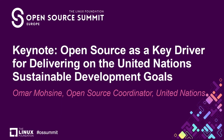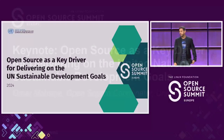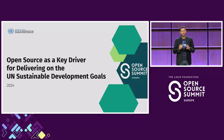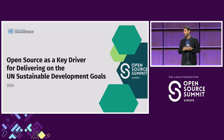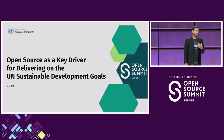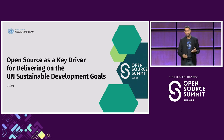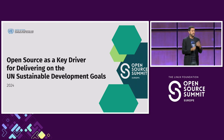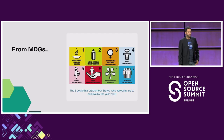Nice to see you all. Hi, my name is Omar Mohsin. I work for the United Nations Office of Information Communication Technology, also for the UN Special Envoy on Technology. Very happy to be here today to talk to you about a topic that is really very close to our heart — the topic that we believe has the potential to really change the work we do as a global community. This is about open source and sustainable development goals.